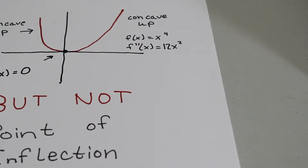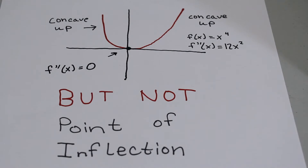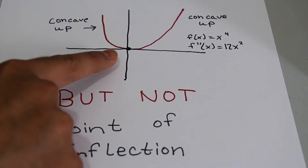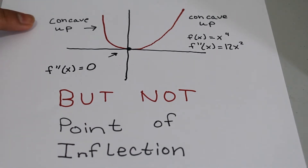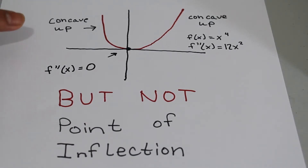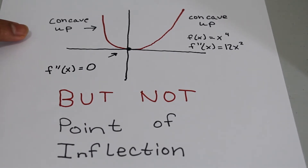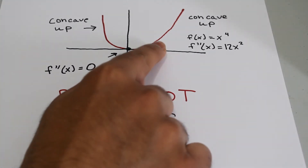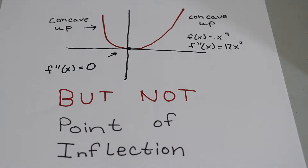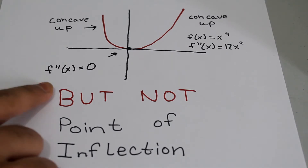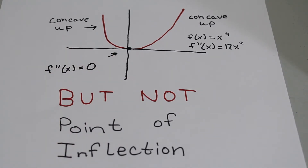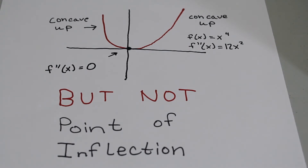Now let's look at another example showing why the sign change is required. Here f'' equals 0 at x = 0, but when x values are less than 0 the curve is concave up, and when x values are greater than 0 the curve is also concave up. The concavity is not changing, so although f'' equals 0, there is no change in signs and therefore no point of inflection at x = 0.